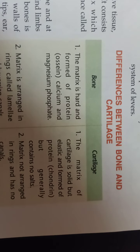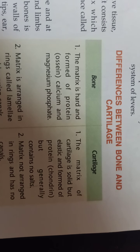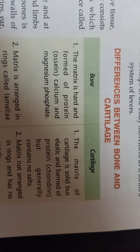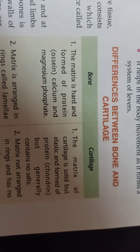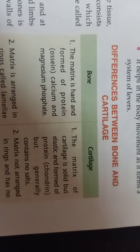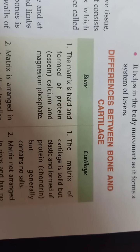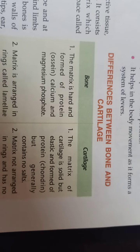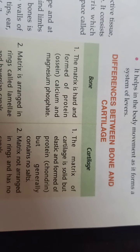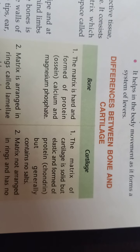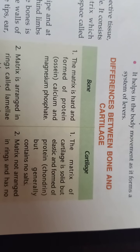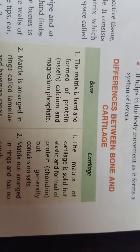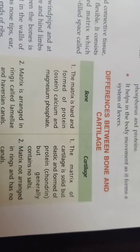Now the difference between bone and cartilage. For bone: the matrix is hard and formed of protein, calcium, and magnesium phosphate. For cartilage: the matrix is solid but elastic, formed of protein — specifically a special protein known as chondrin — and generally contains no salts.